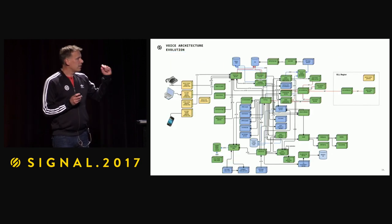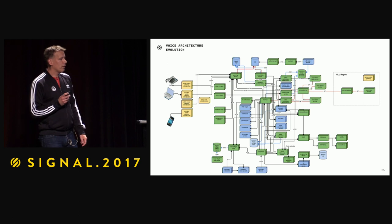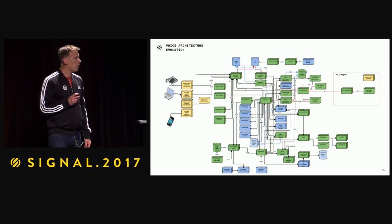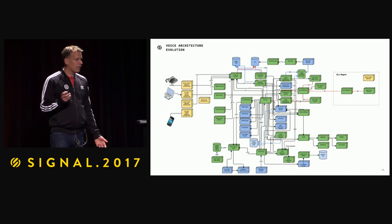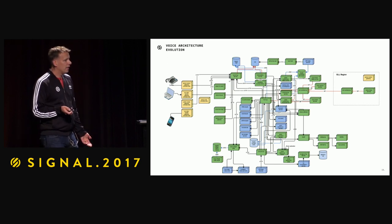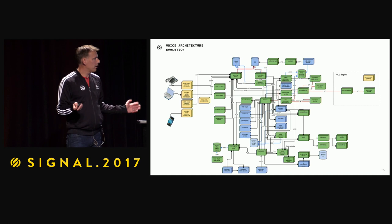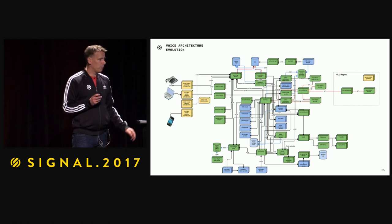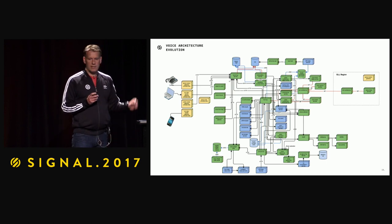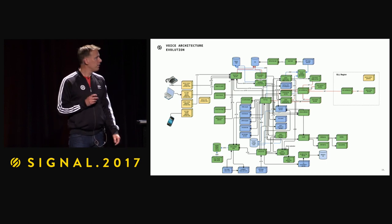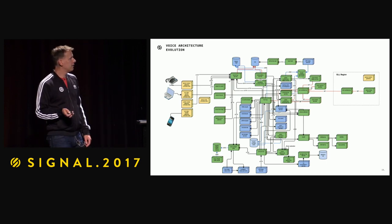This is a snapshot of all the services we have right now — roughly 50 different services. It might look a bit complicated, but we'll revisit this diagram in a few slides.